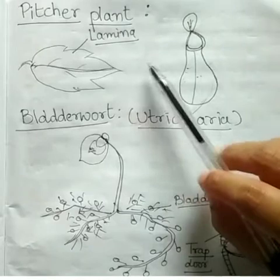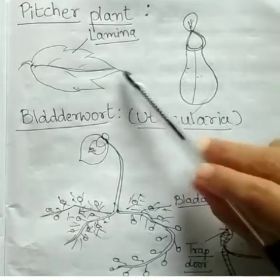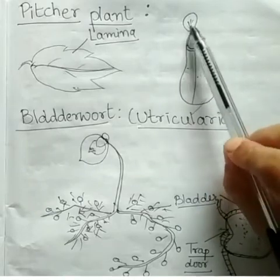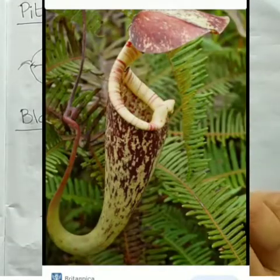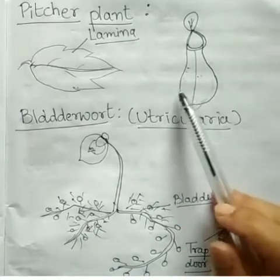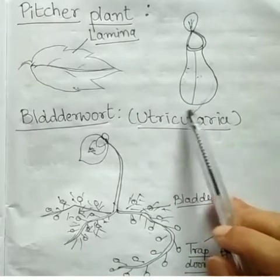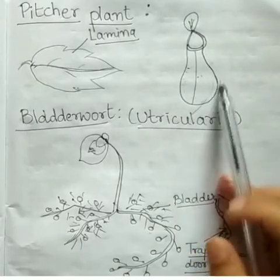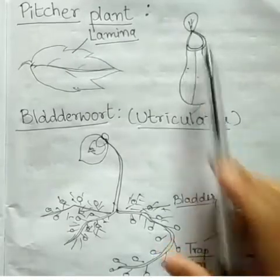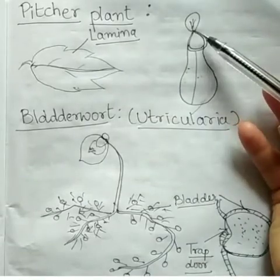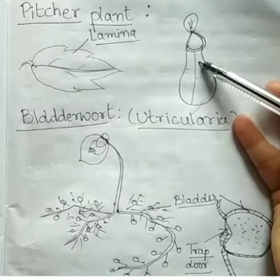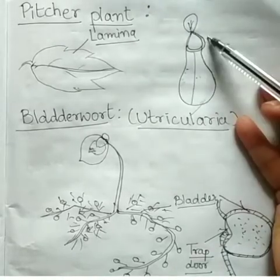The tip of the lamina — the leaf apex — changes into a lid which can open or close the mouth of the pitcher. There are hairs inside the pitcher directed downwards. When an insect falls into the pitcher, the lid closes and the trapped insect gets entangled in the hairs of the pitcher and hence cannot escape.